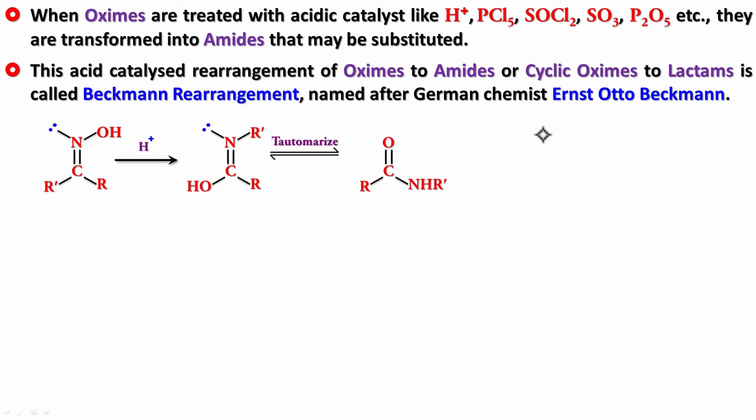It will go to its so-called keto form and become an amide. The H transfers from O to N — a 1,3-shift — and the pi bond shifts from C=N to C=O. You get an amide.